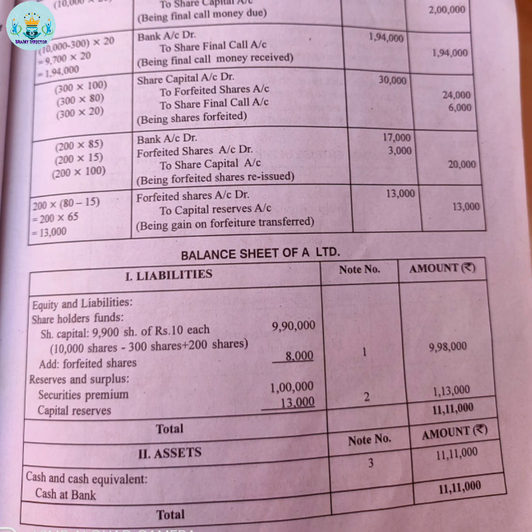This is the liability side. The asset side: cash and bank is Rs.11,11,000. The bank entries: first entry Rs.2,60,000, second entry Rs.3,80,000, third entry Rs.3,80,000. Both sides of the balance sheet match at Rs.11,11,000.